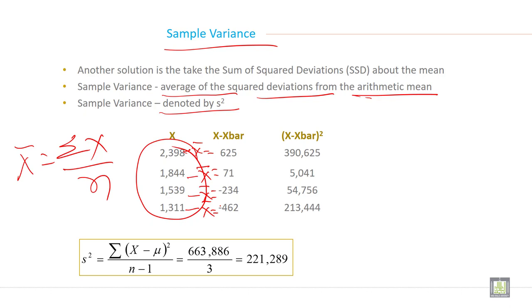Then X minus X bar square. 625 into 625 and it is written here. 71 into 71 and it is written here. Minus 234 into minus 234 and it is written here. Minus 462 into minus 462 and it is written here.